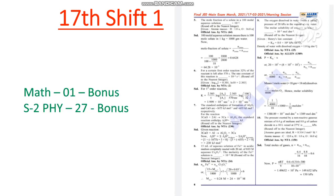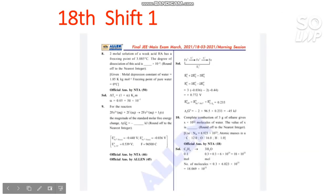Also, for question number 9 in Shift 1 chemistry section, the answer is 25 in the final answer key — as it was in the initial answer key — it has not changed to 139. So the final confirmed answer for question 9 as per NTA is 25.